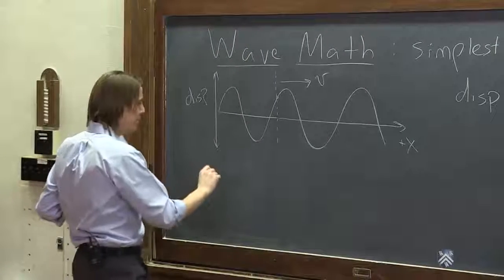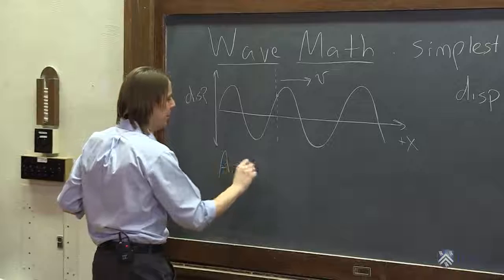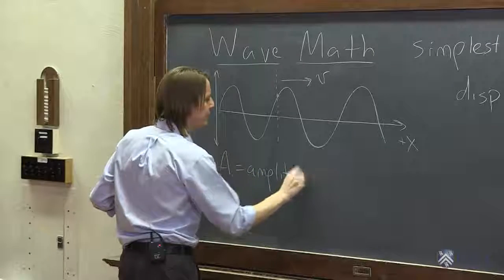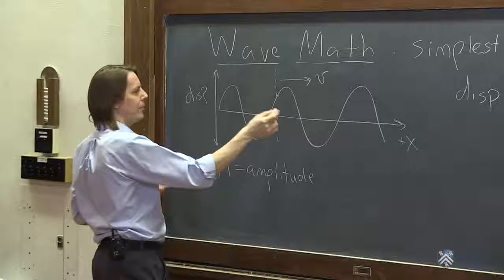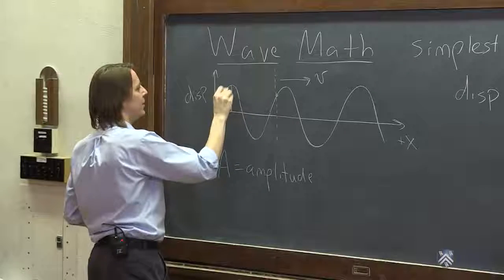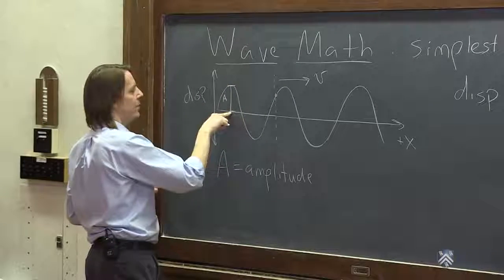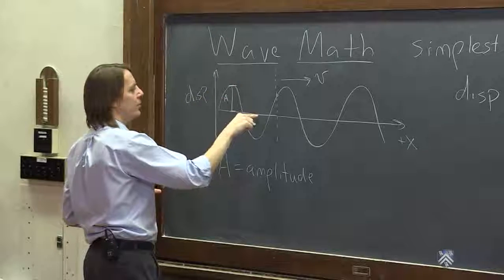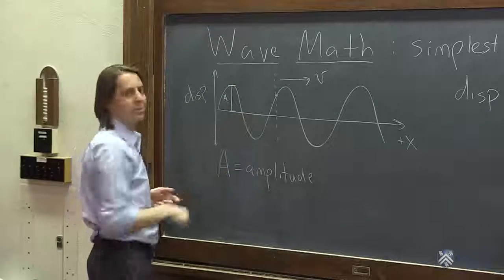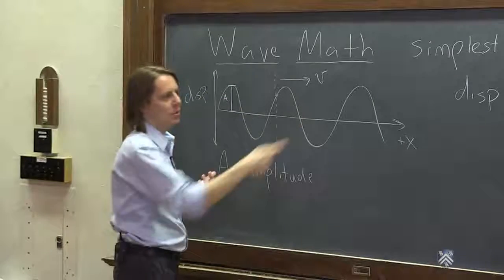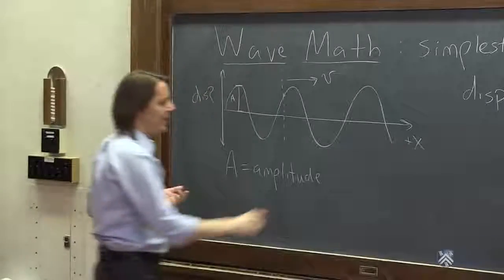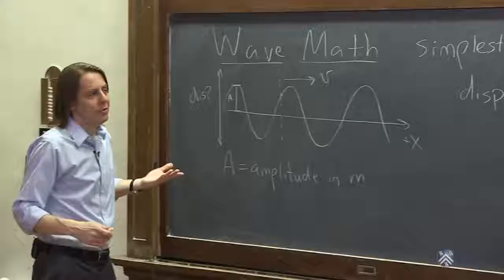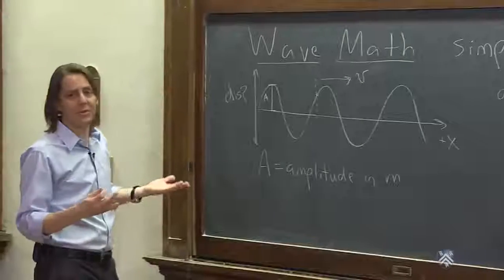One property you probably know is the amplitude — that's just how big the disturbance is. For a sinusoid it's from zero to the maximum, or zero to the negative maximum. That's what goes in front of sine. If the disturbance is displacement of a string, it would be in meters, but the amplitude of a wave can be in many different units because there can be sound waves, light waves, and so on.